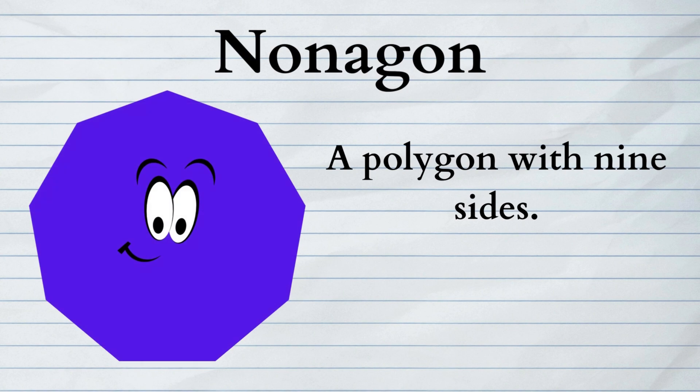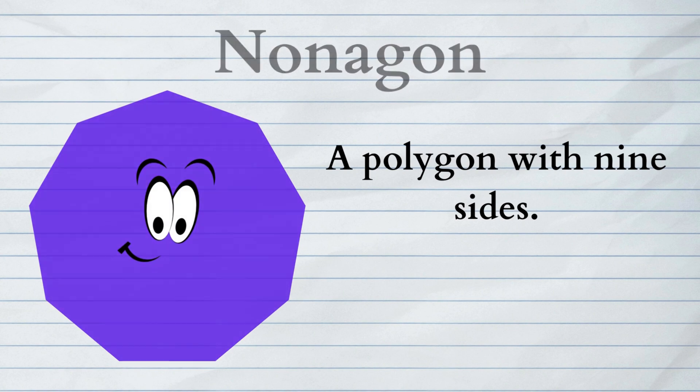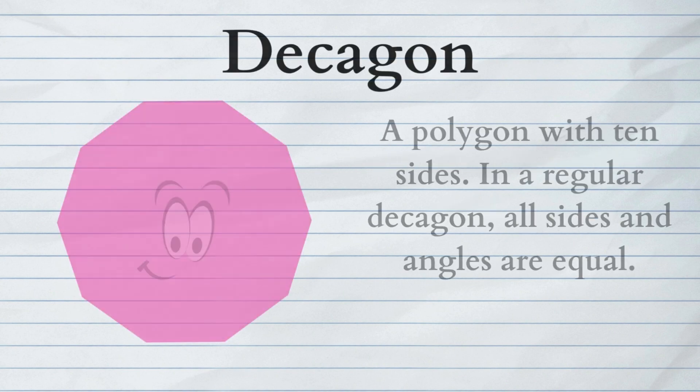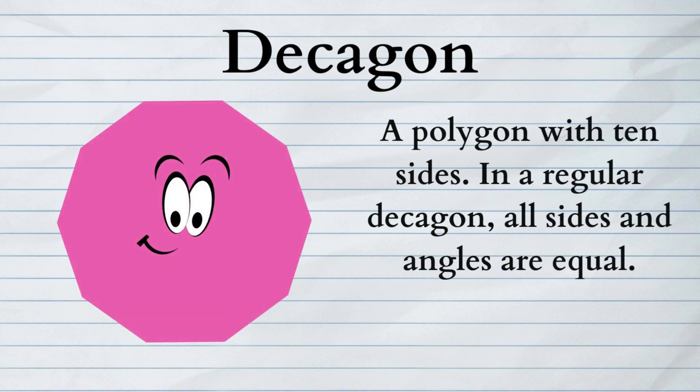Nonagon: a polygon with nine sides. Decagon: a polygon with ten sides. In a regular decagon, all sides and angles are equal.